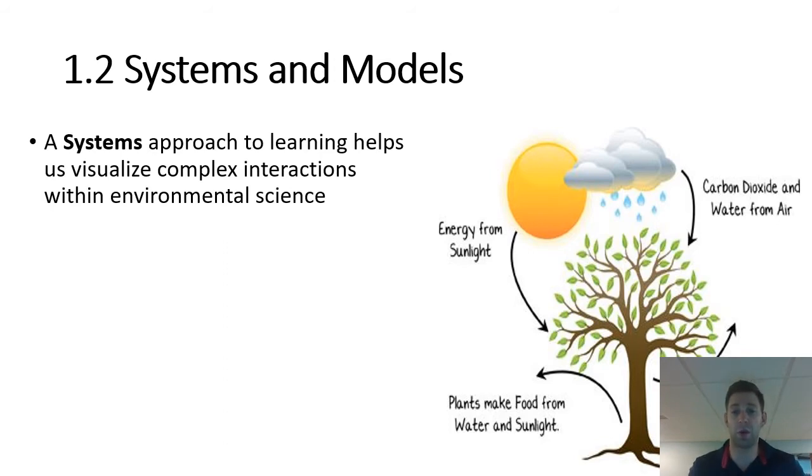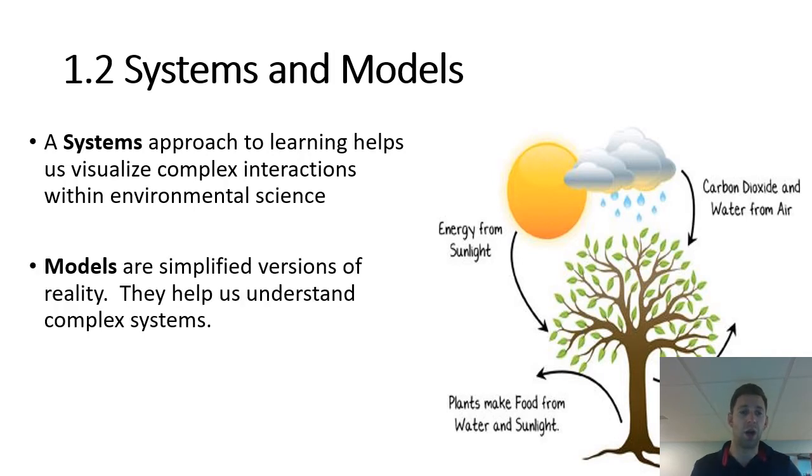All right, so obviously we'll start with what a system is. A system is an approach to learning that helps us visualize complex interactions within environmental science. So looking at this course from a system standpoint, it's just a different way to view the world and the parts that make the world, the interactions, the complexities. That's basically how this course approaches learning. Models are simplified versions of reality. A model is something that helps us understand a complex system. You guys probably already use models, whether you realize it or not.